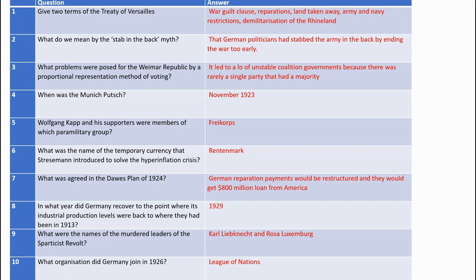With proportional representation, votes are spread out amongst several parties, so you don't tend to get one party that gets more than 50%. If a party doesn't have a majority they have to share power with other parties, which can make it difficult because they sometimes disagree, leading to government collapse and more elections. For some people who were distrustful of democracy, that made it seem like the country was not very well organised.